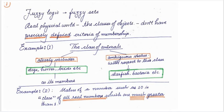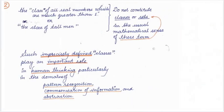Another very good example is the status of a number such as 10. The status of this number in a class which we are telling is of all real numbers which are much greater than 1. So this class which I am taking here is class of all such real numbers which are much greater than 1. Now what is the status of this number 10 in this class? Is it belonging or is it a member of this class? Such is an example where we are not able to precisely define the criteria of membership.